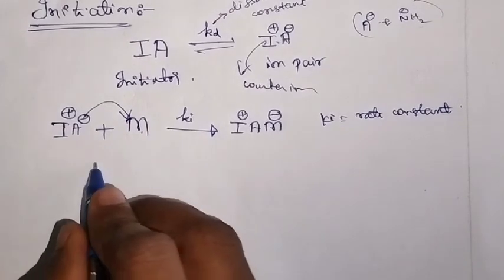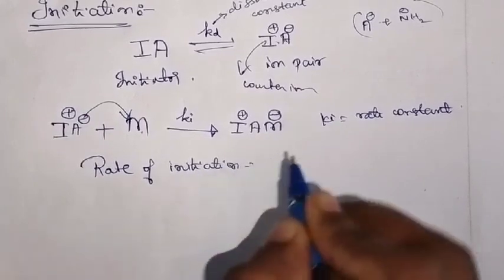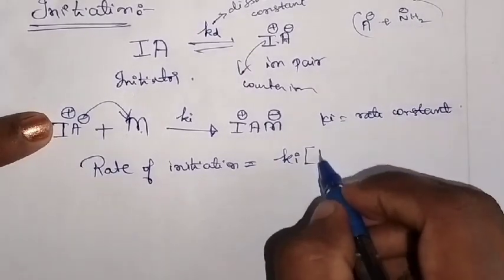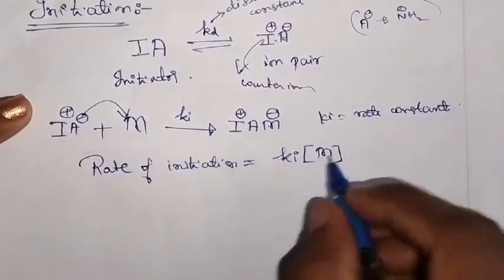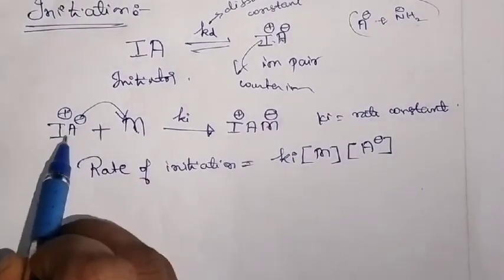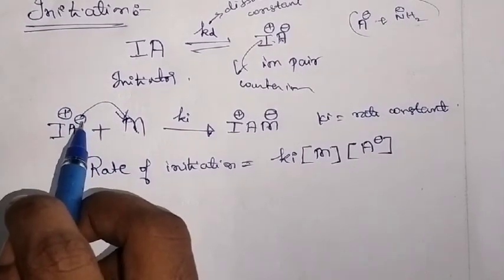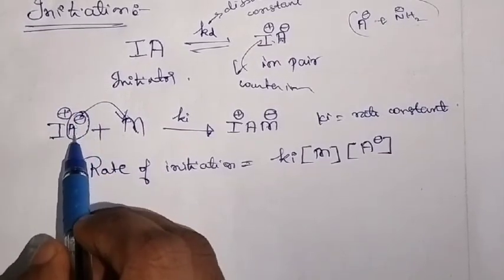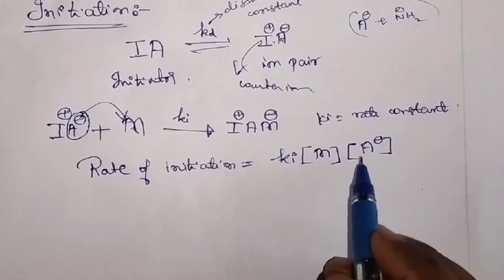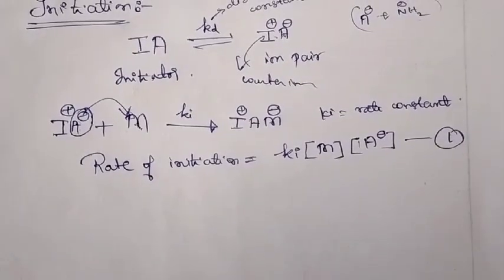Once you have written Ki — the rate constant for the initiation step — you need to write the rate of initiation. The rate of initiation is given by rate constant Ki into the concentration of the reactants. There are two reactants, but I am writing only A⁻, because A⁻ is attacking M. I⁺ is just a counter ion present along with the anion. So, Ri = Ki[A⁻][M]. I call this equation number 1.